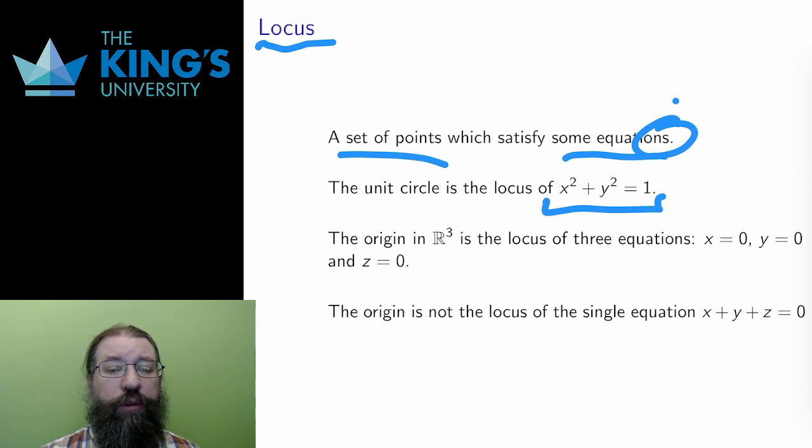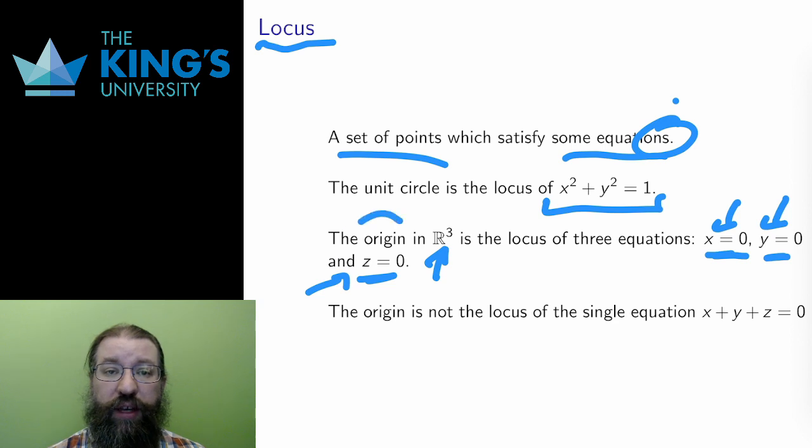For an example of multiple equations, consider the equations x equals 0, y equals 0, and z equals 0 in R3. There are three equations here, and the points in the locus must satisfy all three equations. The first equation insists that the x-coordinate is 0, the second that the y-coordinate is 0, and the third that the z-coordinate is 0. The only point that matches all three of these is the origin, the 0 vector. Therefore, the locus of these three equations is just the origin.